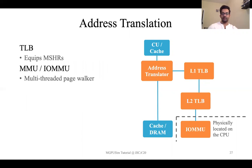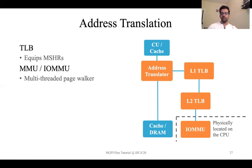One important thing to note is that to increase memory-level parallelism, TLBs typically have multi miss status holding registers (MSHRs). This allows them to support hits under misses, which is very important for filtering of requests.